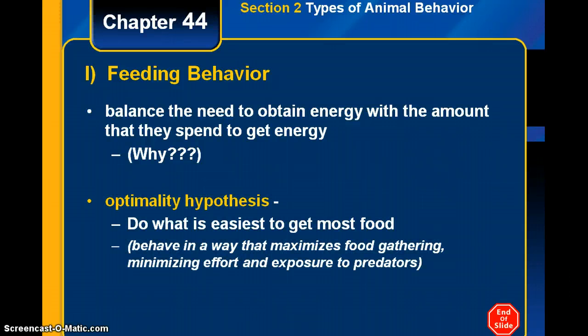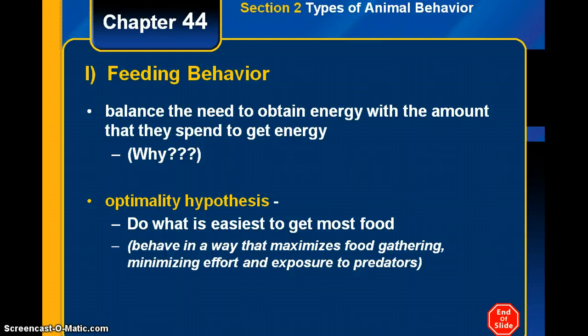Why does a tiger maybe give up after chasing its prey for so long? What they follow is called the optimality hypothesis. It says they're going to do what is easiest to get the most food — behave in a way that maximizes food gathering while minimizing effort and exposure to predators.